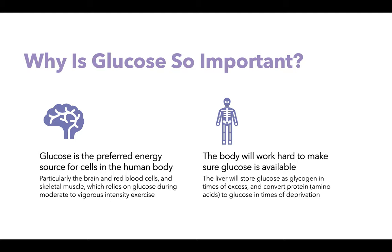Why is glucose so important? Glucose is the preferred energy source for cells in the human body, particularly the brain, red blood cells, and skeletal muscle, which relies on glucose during moderate to vigorous intensity exercise. The body will work very hard to make sure glucose is available. Any extra glucose is packaged as glycogen, and in times of significant need, our body is able to convert protein in the form of amino acids to glucose — showing just how essential glucose is to survival.